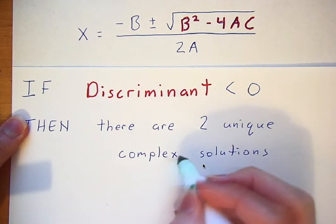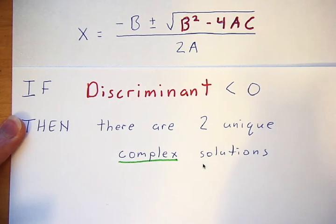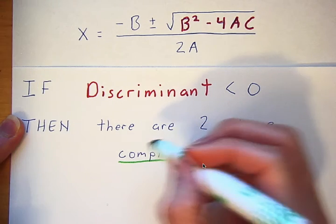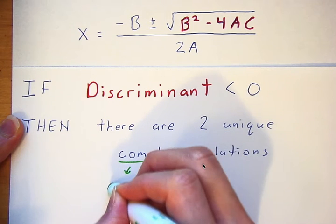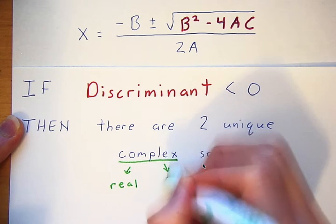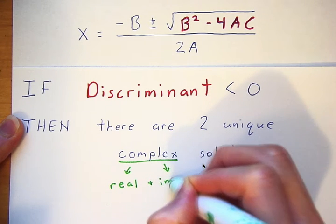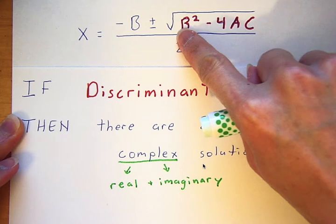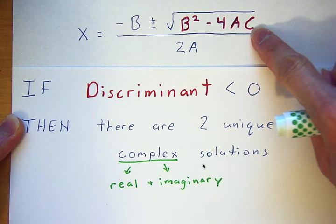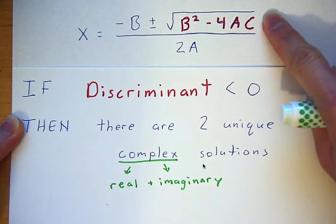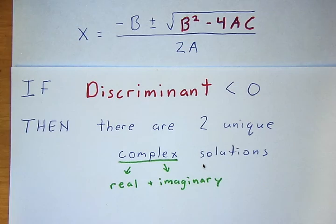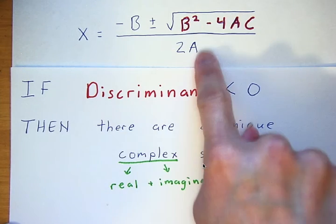If our discriminant is less than zero, we're going to have two unique complex solutions. Complex is a category of numbers — like whole numbers, integers, or real numbers. Complex numbers have a part that is real and a part that is imaginary. The square root of the discriminant gives the imaginary part, and negative b over 2a is the real part.